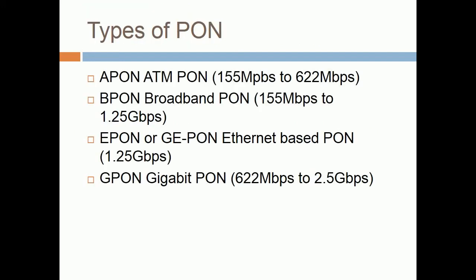Types of PON: APON — ATM PON, 155 Mbps to 622 Mbps; BPON — Broadband PON, 155 Mbps to 1.25 Gbps; EPON or GE-PON — Ethernet-based PON at 1.25 Gbps; and GPON — Gigabit PON, 622 Mbps to 2.5 Gbps.